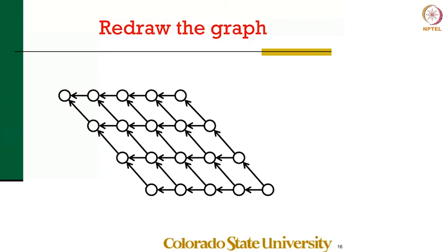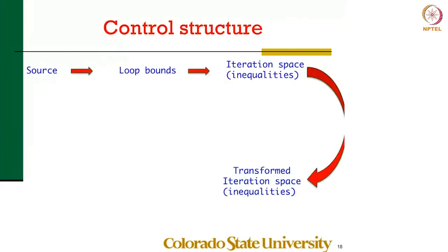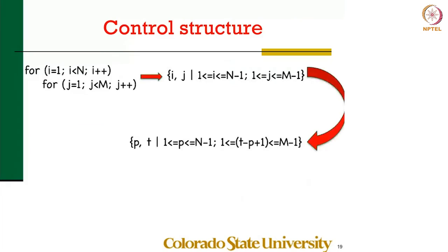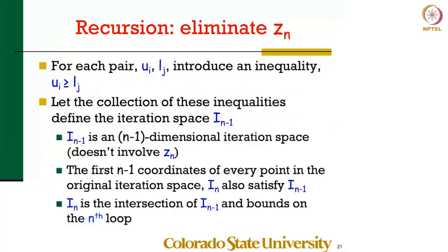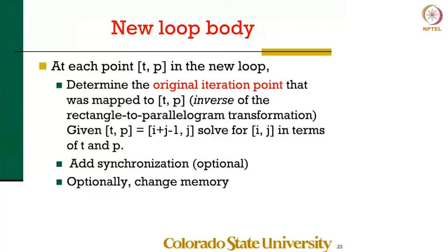So what I'm going to do is in my loop, I am going to define two new local variables called I and J. I equals the inverse mapping applied to TP, and J equals the second component of the inverse mapping applied to TP. Then I'm going to verbatim copy the old loop body.